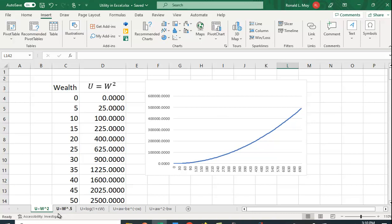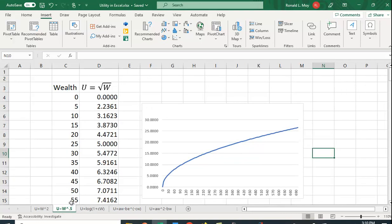How about utility as the square root of wealth? Well, again, I've just plotted the data. And here I just use the square root function to take the square root of these different values. And I can see that I have this concave function. That is, if I took the second derivative, it would be negative. So that is, wealth is increasing at a decreasing rate. This happens to be the case where we have risk aversion.